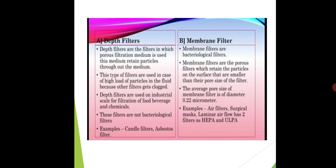Membrane filter is a bacteriological filter, meaning bacteria also filter out. Depth filter is not a bacteriological filter — it filters turbidity and particles, but not bacteria. Membrane filters have pores fine enough to filter out bacteria. These filters retain particles on the surface that are smaller than the pore size. The pore diameter is 0.22 micrometer. Examples include air filters, surgical masks, and laminar airflow. Two types of air filters are HEPA and ULPA.